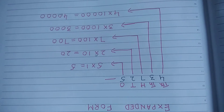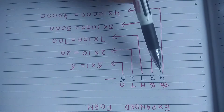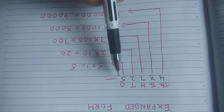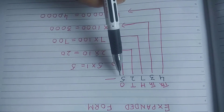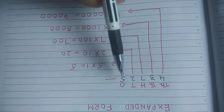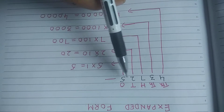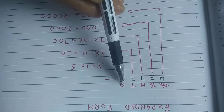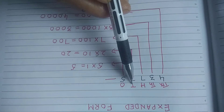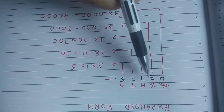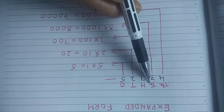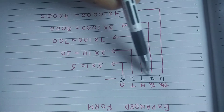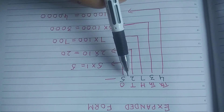Suppose we have the number 43,725 and we want to write it in expanded form. Let's first see what the places are. This is five ones, two tens, seven hundreds, three thousands, and four ten-thousands. These are the places of these digits.